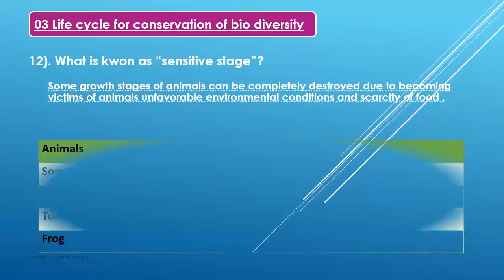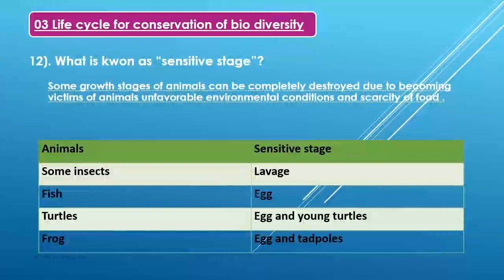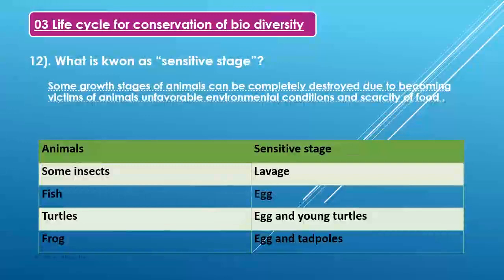The third advantage is life cycles for conservation of biodiversity. What is known as a sensitive stage? Some growth stages of animals can be completely destroyed due to becoming victims of predators, unfavorable environmental conditions, and scarcity of food.